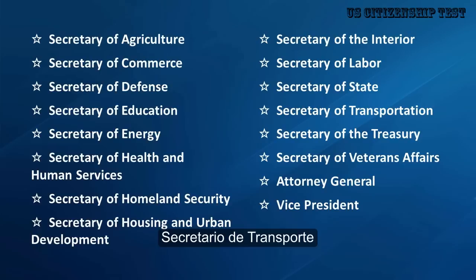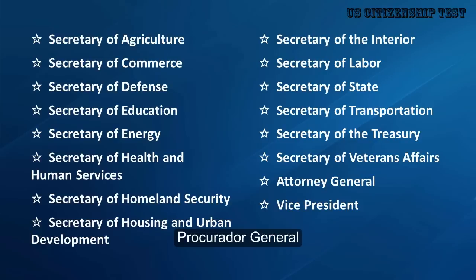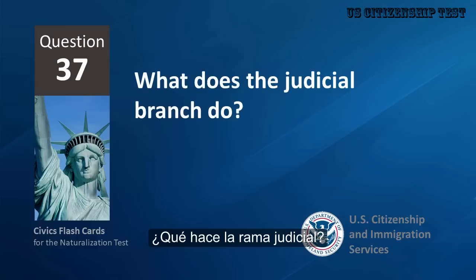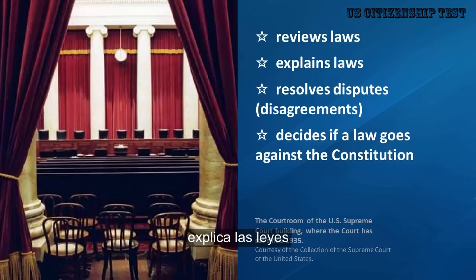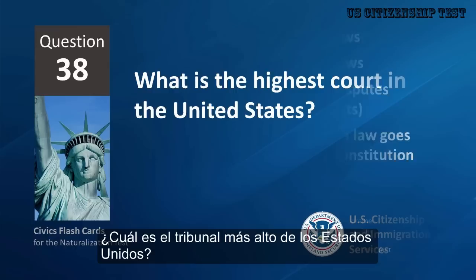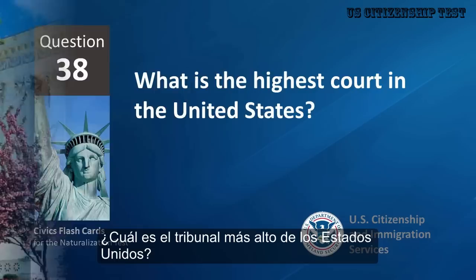Secretary of State. What does the judicial branch do? Reviews laws, explains laws, resolves disputes and disagreements, decides if a law goes against the Constitution. What is the highest court in the United States? The Supreme Court.